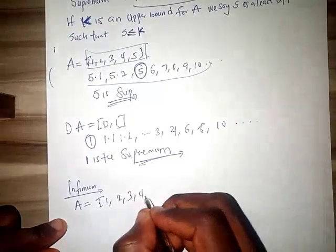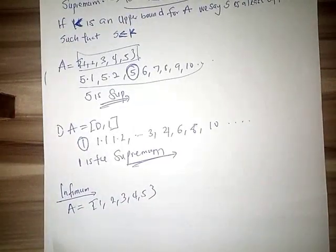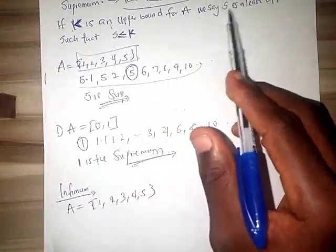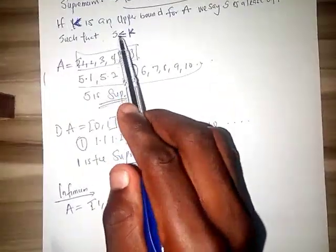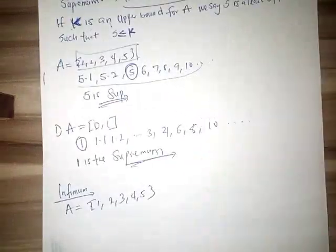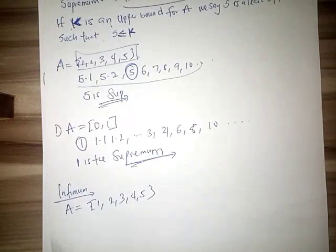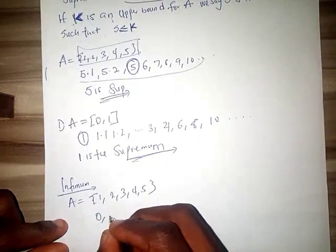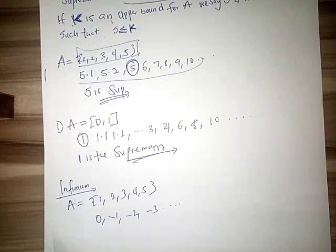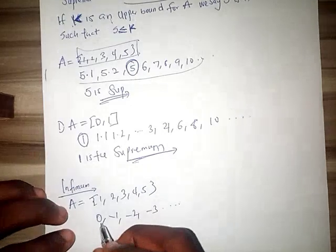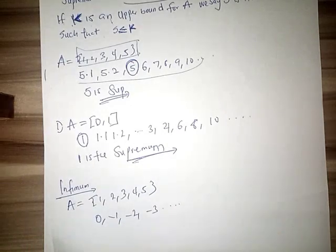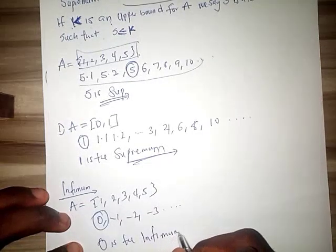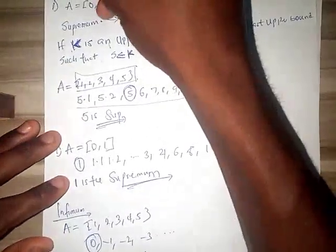Let me use this one as base case. We have A equal to 1, 2, 3, 4, 5. Now you can define that one as if k is an upper bound for A, we say s is a least upper bound such that s is greater than k, anyone you like. Now from here you notice that the lower bounds of this one is what? Zero, minus one, minus two, minus three, dot dot dot. I told you how we get that. Now out of all this which one is the greatest? Notice that it is zero, therefore zero is the infimum. So as simple as that.